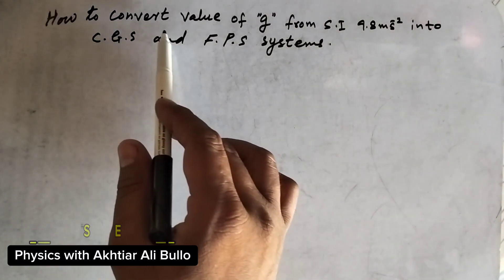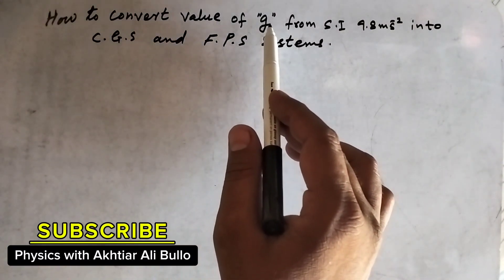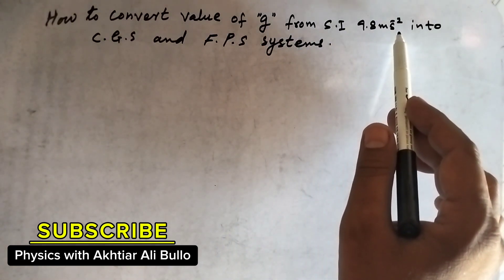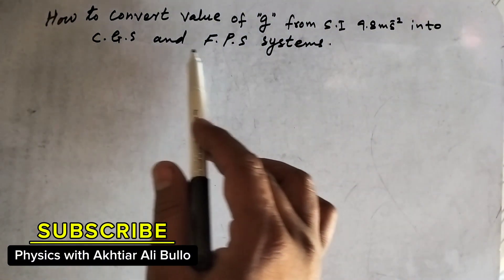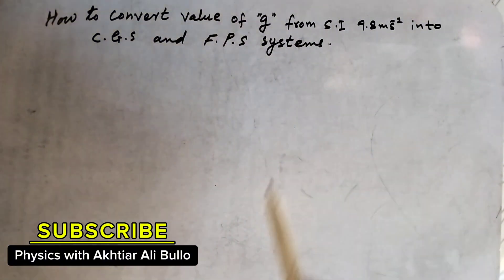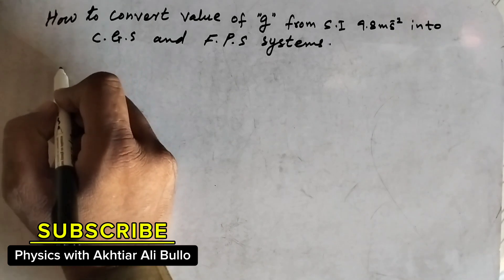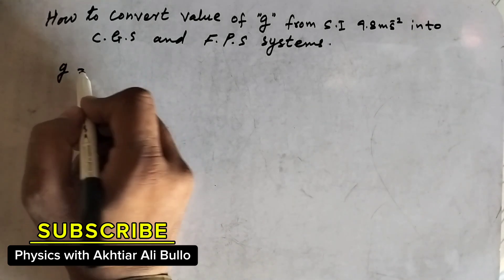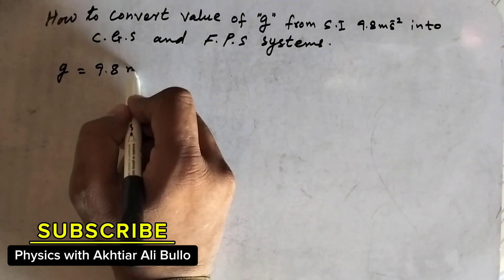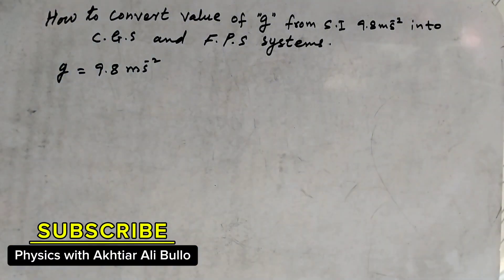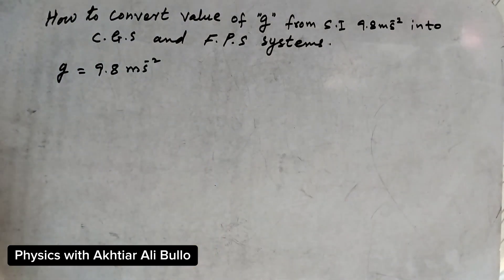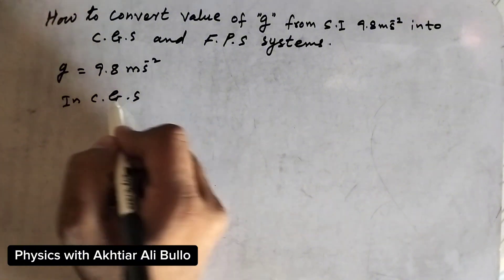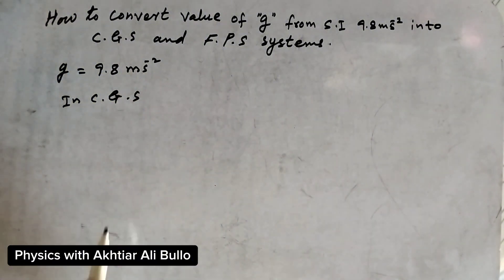The question asks how to convert the value of g, the acceleration due to gravity, from SI (9.8 meters per second squared) into CGS and FPS systems. First, we'll convert it to the CGS system in centimeter, gram, and second units.